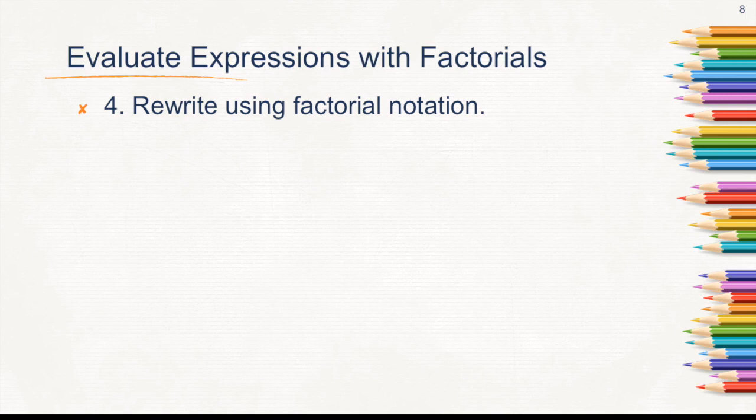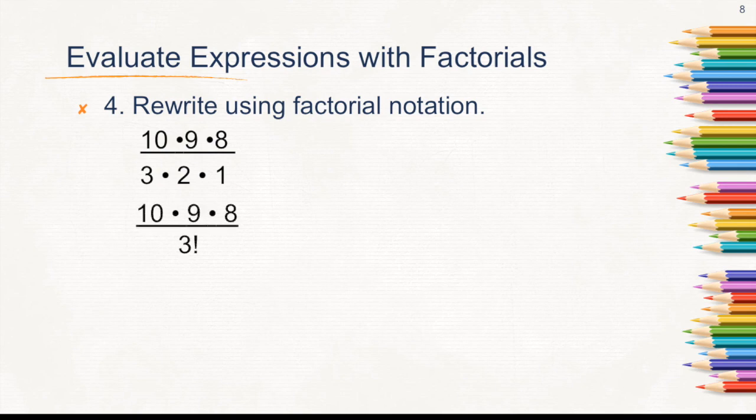Now let's try answering number 4. Rewrite using factorial notation: 10 times 9 times 8 all over 3 times 2 times 1. Let's look at the denominator because it's easier to rewrite that using factorial notation, which is actually 3 factorial.